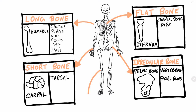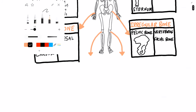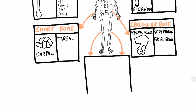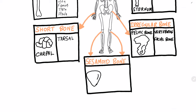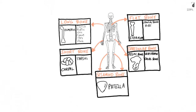We are going to take a look at the sesamoid bone. A sesamoid bone is a small, round bone. As the name suggests, it is shaped like a sesame seed. These bones form in tendons where a great deal of pressure is generated in a joint. The sesamoid bone protects the tendons by helping them overcome compressive forces. The patella is the only sesamoid bone found in humans.